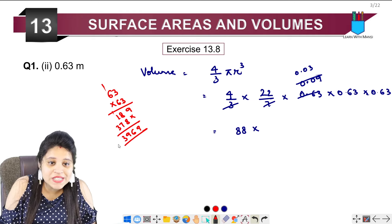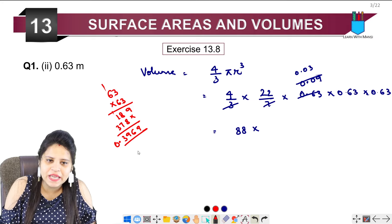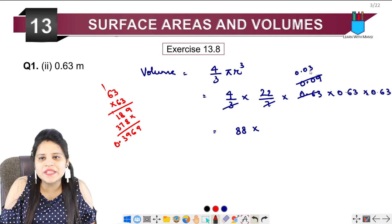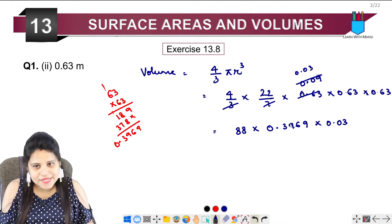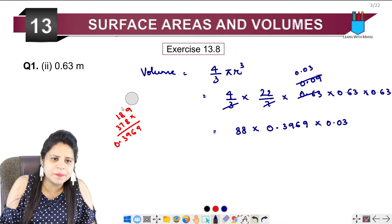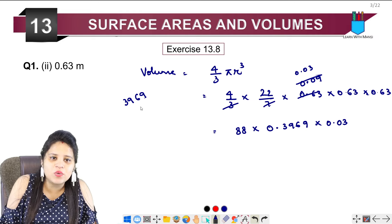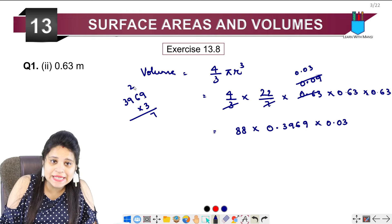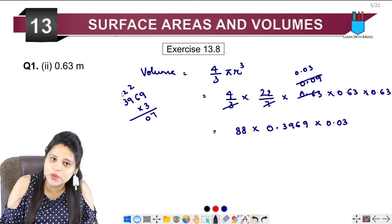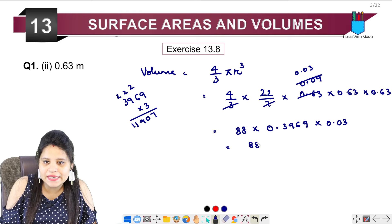Lekin 1, 2, 3, 4, 4 digit pehle decimal lagna hai, matlab 0.3969. Into 0.03. Ab aap kisi bhi order mein isko multiply kar sakte hain. Pehle main isko 3 se multiply kar rahi hun, matlab 3, 9, 6, 9 ko hum multiply kar rahe hain 3 se. So hamare paas aayega 3, 9 se 27, 3 into 6 is 18, 19, 20. 3, 9 se aage 27, 20, 29. 3, 3 se 9, 10, 11. So hamare paas aa gaya, yahan par likh lete hain 88 multiplied by 11907.